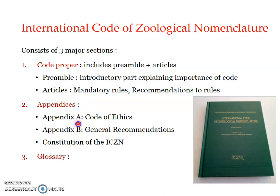The second section is the Appendices, which has three parts: Appendix A, Appendix B, and the Constitution of the ICZN. Appendix A covers the Code of Ethics, and Appendix B includes general recommendations. The third major section is the Glossary, which lists all terms used in the International Code of Zoological Nomenclature and gives the definition for each term.